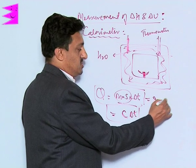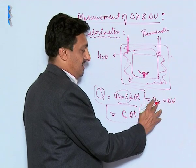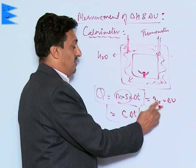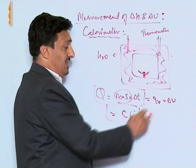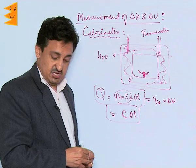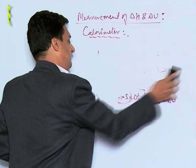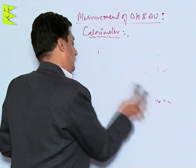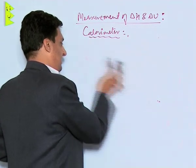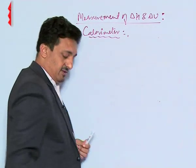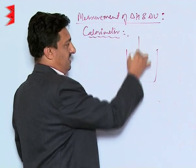But remember, since in this setup the volume is kept constant, this is always equal to qv. So this gives us the internal energy change ΔU. If we have to find out the value of ΔH, we need an open system where the volume must be allowed to increase, so we cannot keep it constant.